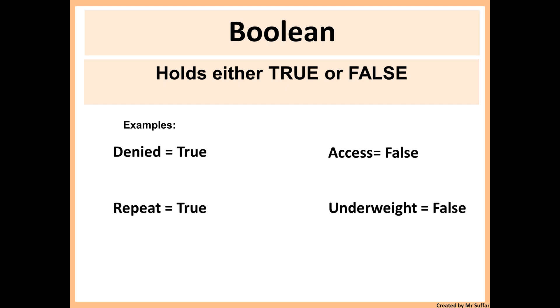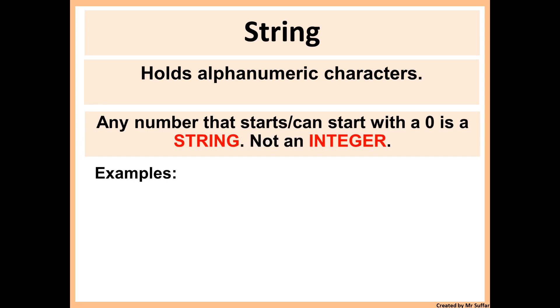And finally, which is the one which is the most important one and the most complicated one, which is string. So strings hold alphanumeric characters, that means it can hold letters or numbers or a mixture of both. Now an example of that is name - name contains letters, so it has to be a string. Team - team contains letters, that has to be a string.